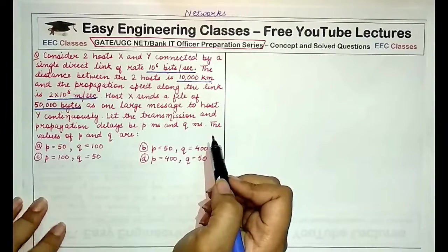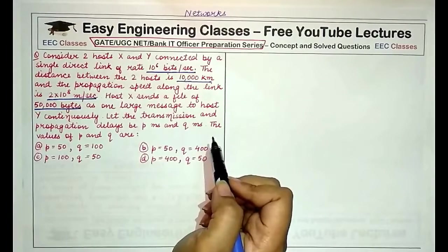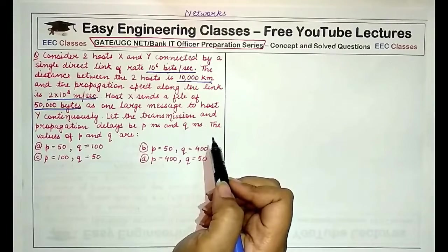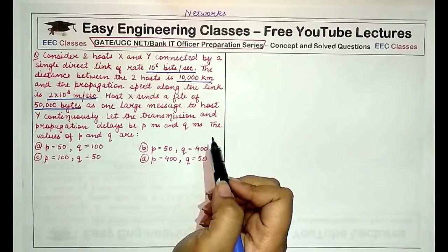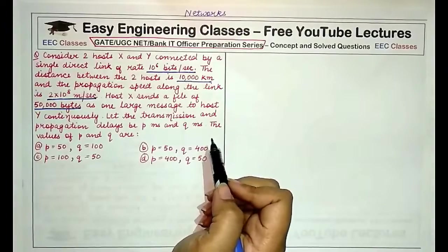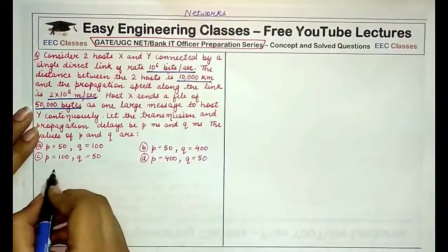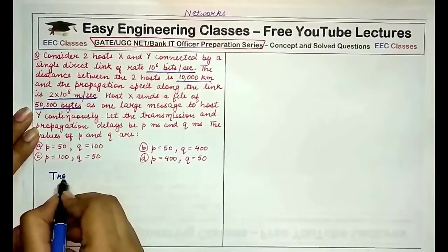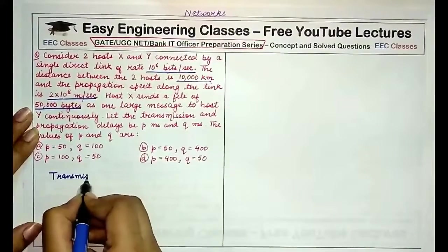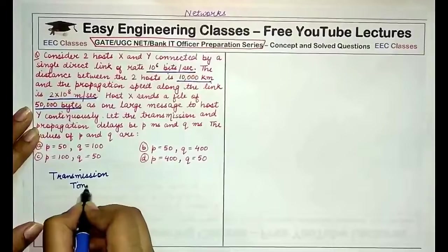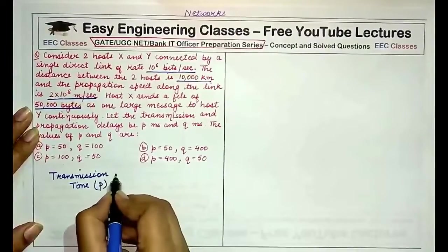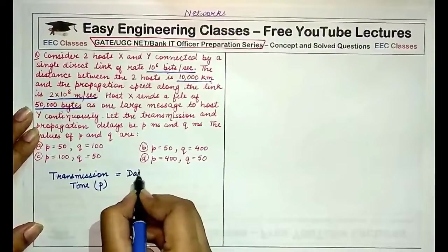Let the transmission and propagation delays be p milliseconds and q milliseconds. The values of p and q are? All right, so this question asks you about two values, p and q, which are the transmission time or the transmission delay and the propagation delay. Now in such a question, if you remember the formula, it is very easy to solve. So transmission time is given by the formula: transmission time, or p as it is stated in this question, p is equal to the data size.